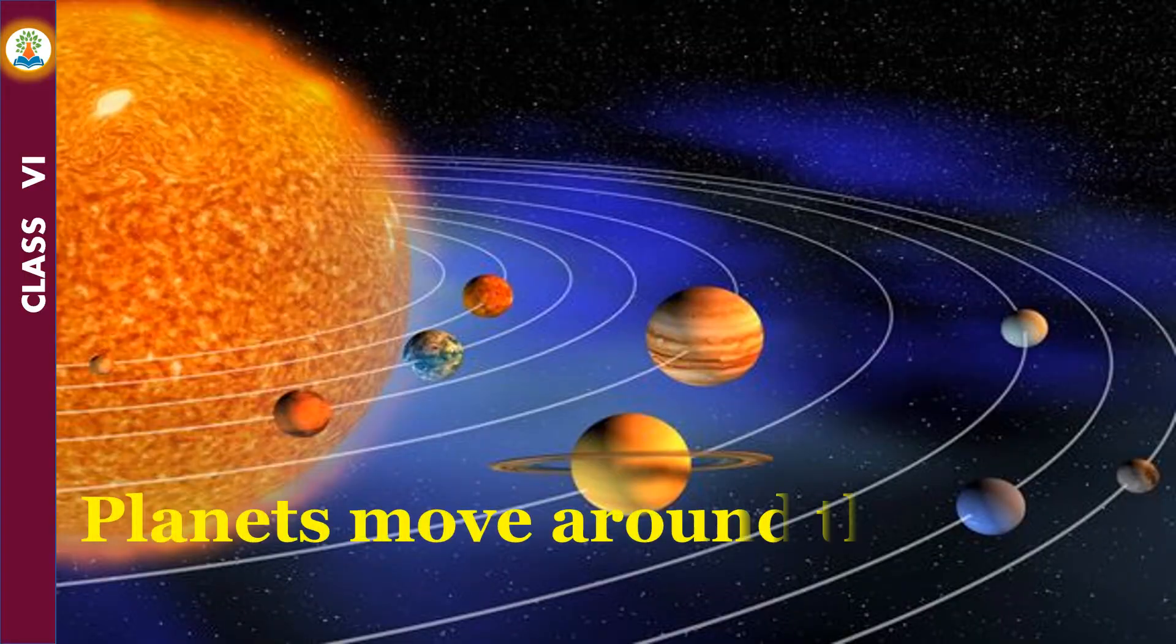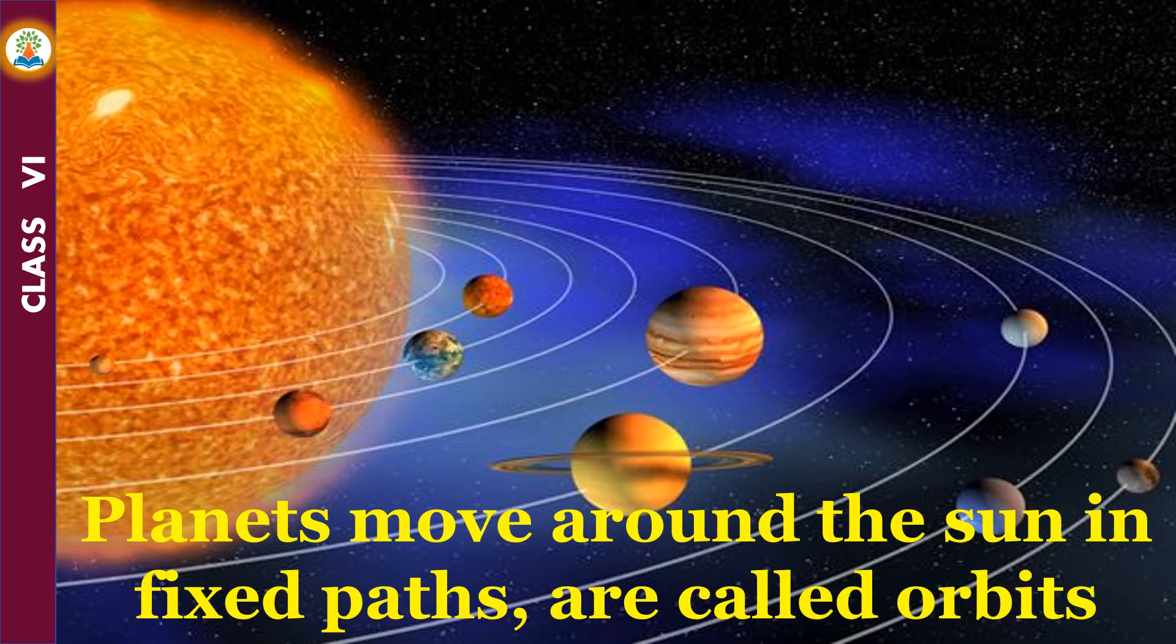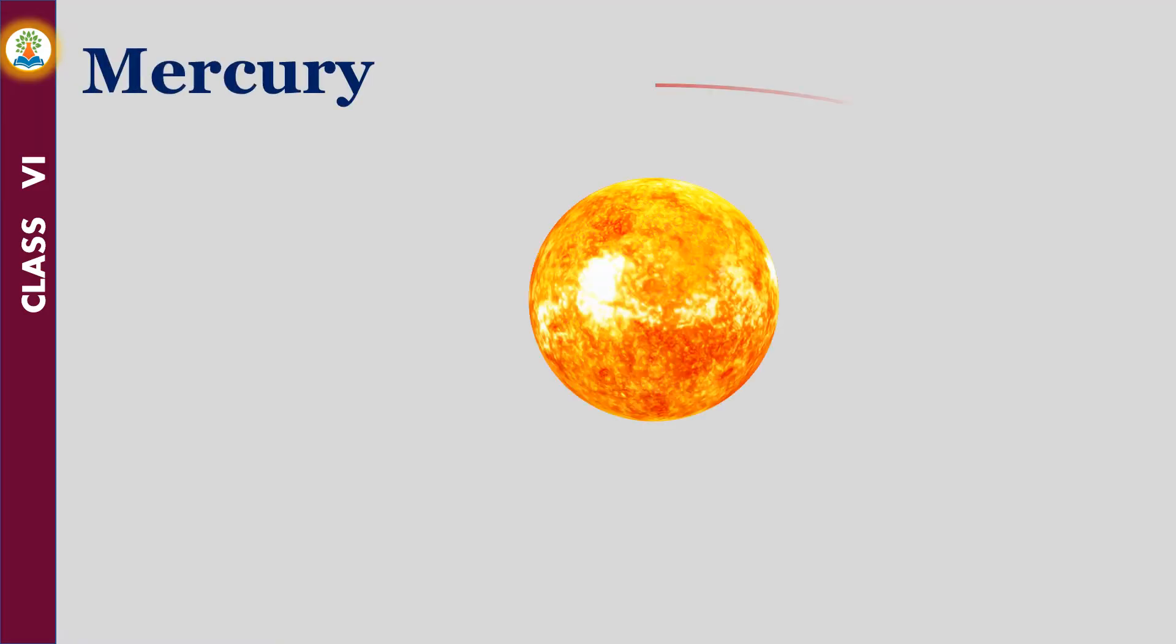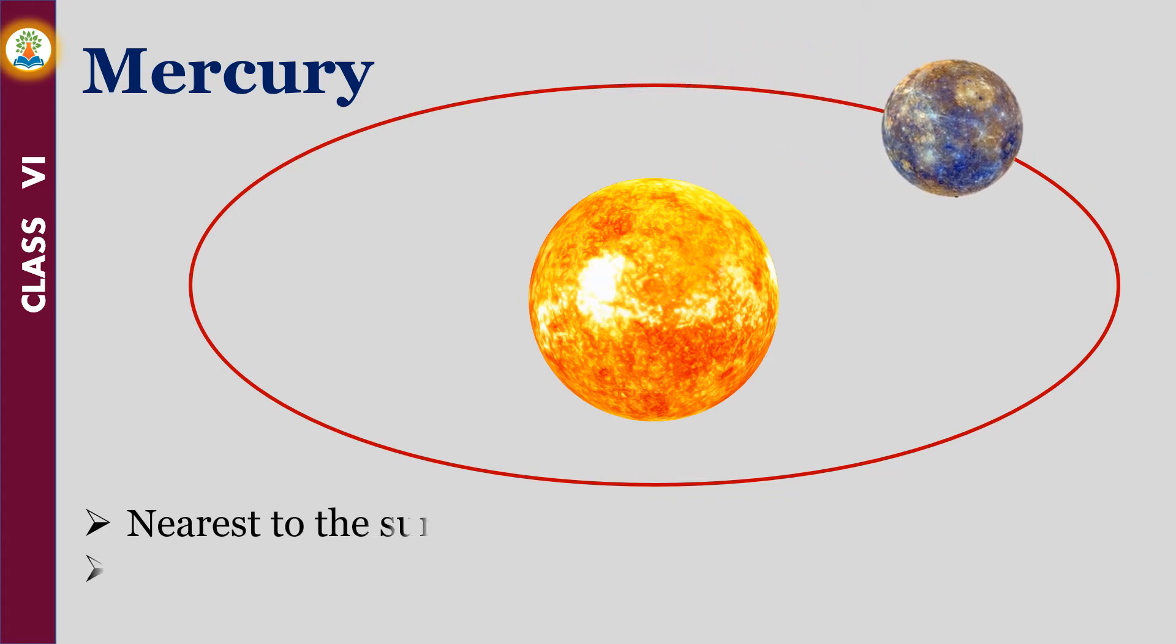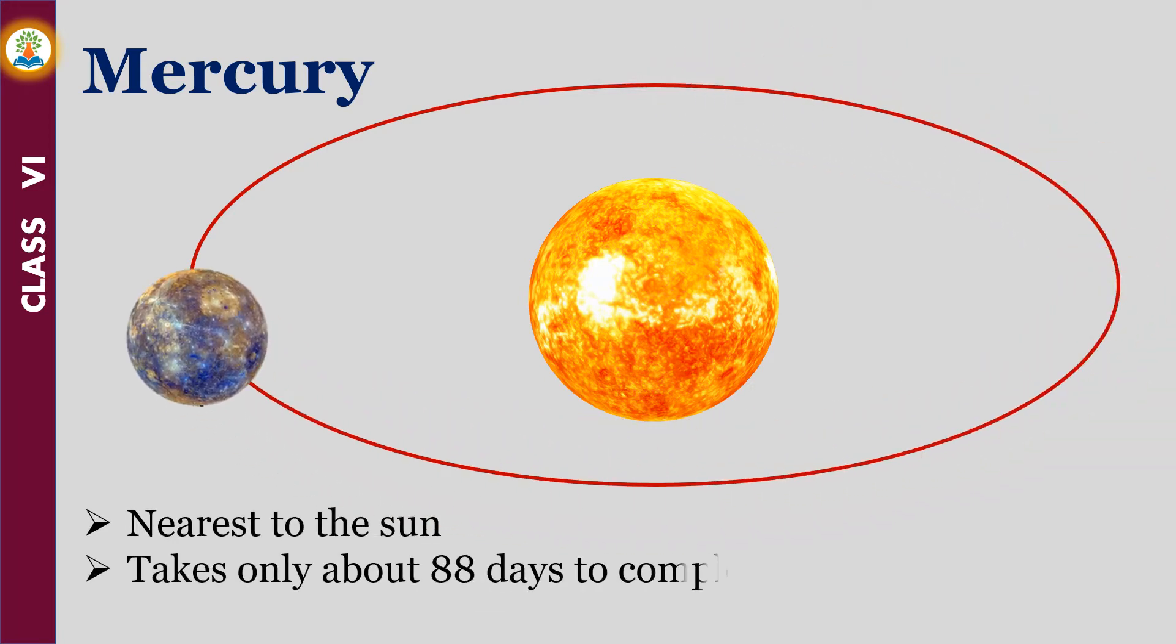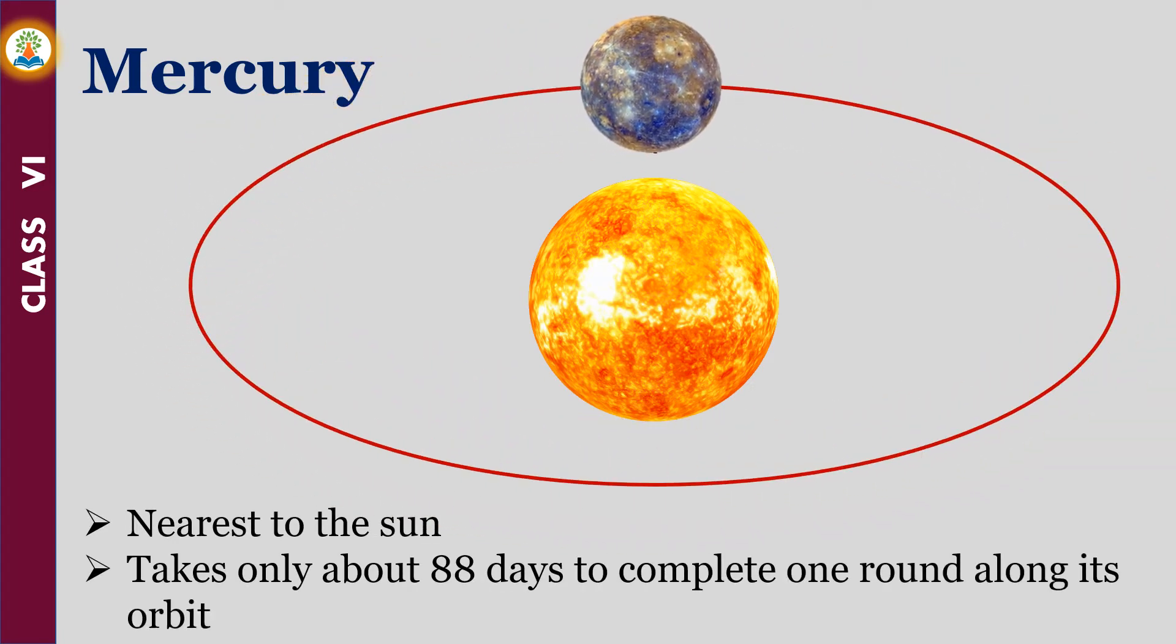Planets move around the sun in fixed paths called orbits. Mercury is nearest to the sun. It takes only about 88 days to complete one round along its orbit.